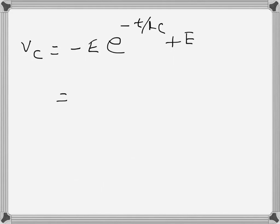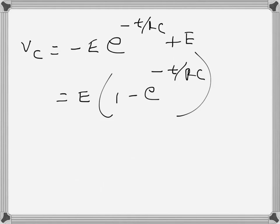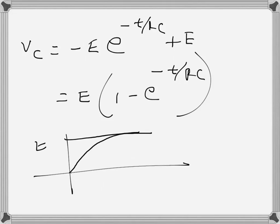Substituting C1 = E back in, the final expression is Vc = E·(1 minus e^(minus t over RC)). This shows the capacitor voltage exponentially building up — initially zero and finally settling to the battery voltage. Again, this was derived without writing the differential equation, simply by knowing that any transient component is exponentially decaying with the circuit's time constant.